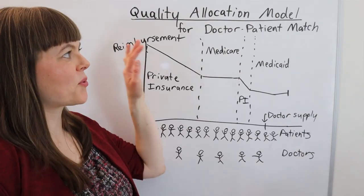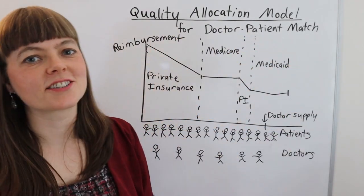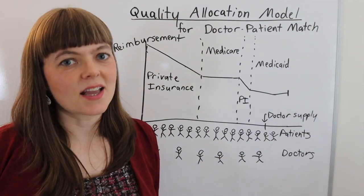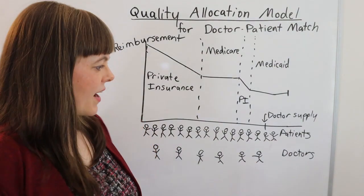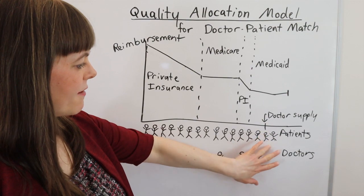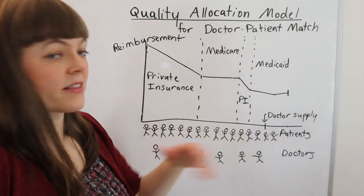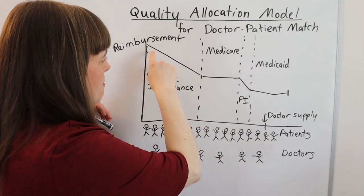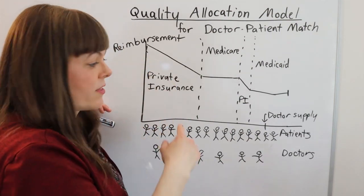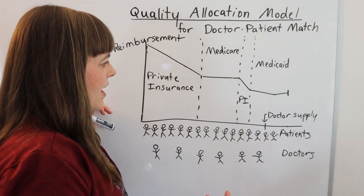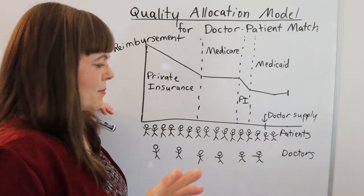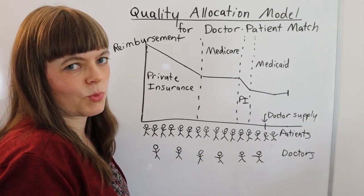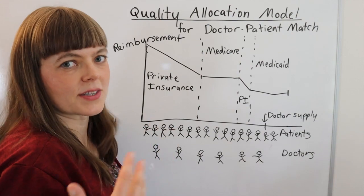In this video I'm going to talk about the quality allocation model for matching doctors and patients in economics. This is a useful way of visualizing the situation. We have a graph here which maps onto patients with their insurance. There are some unrealistic things about the graph, but we can relax some of those assumptions once we understand the basics of how this works.